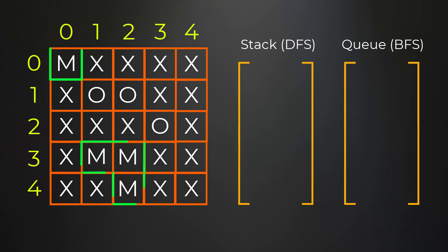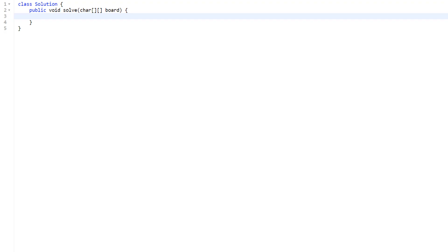We visit position (3,1) and flip it to M. None of its neighbors are O's, so our search stops. Our grid now has all border-connected groups flipped to M's. The last step is to flip any M's back to O's and any remaining O's to X's. We are left with the final matrix where only border-touching O groups remain as O's.